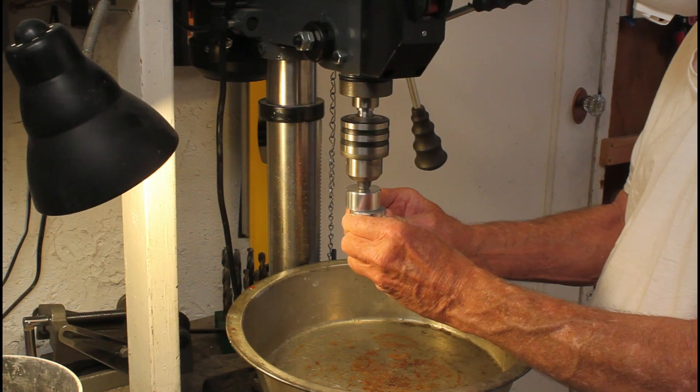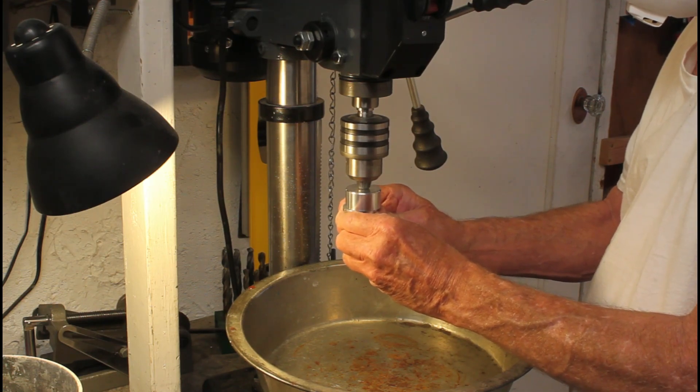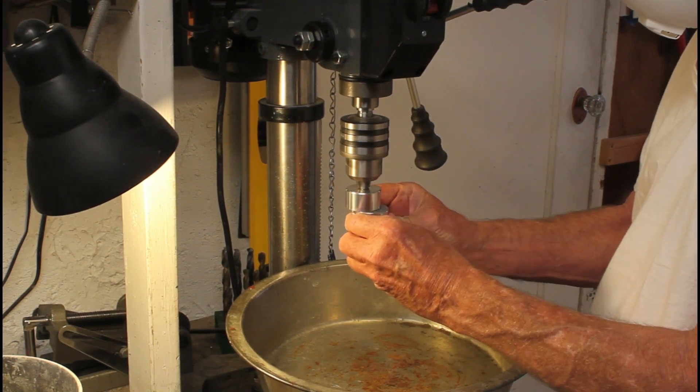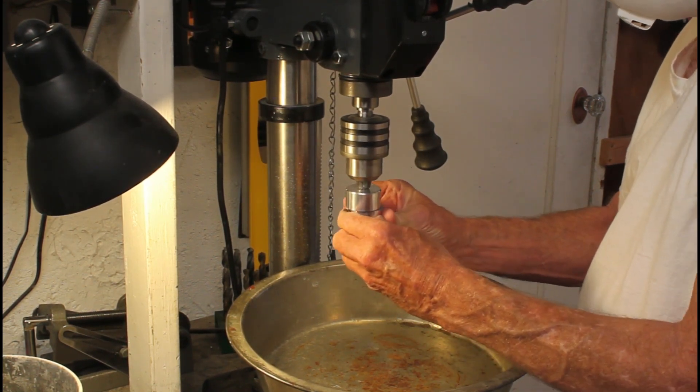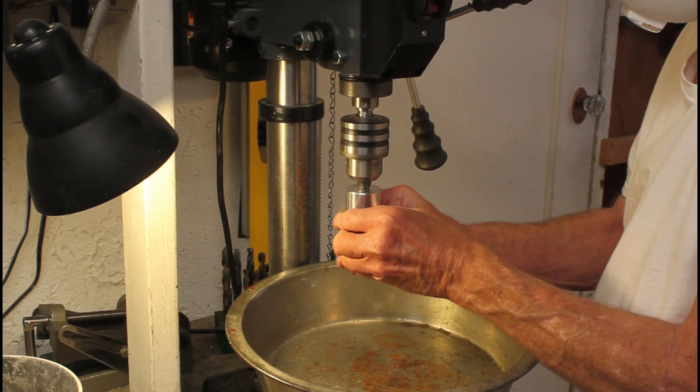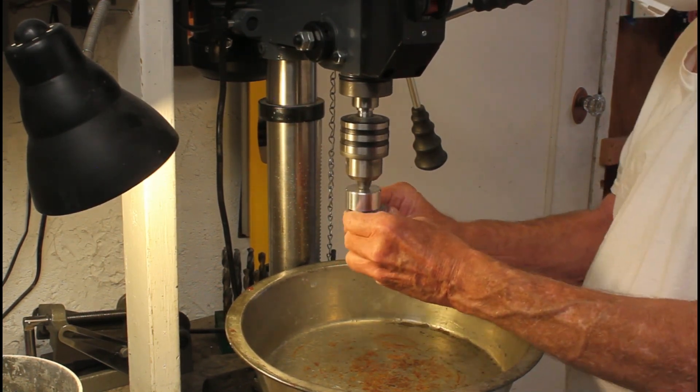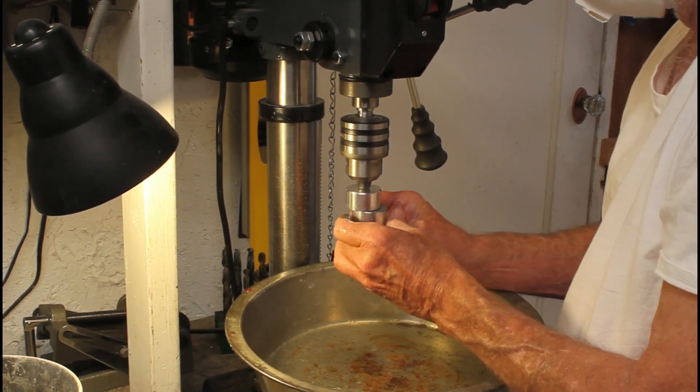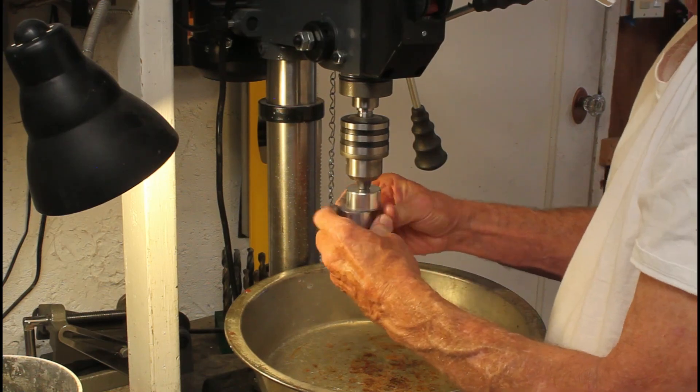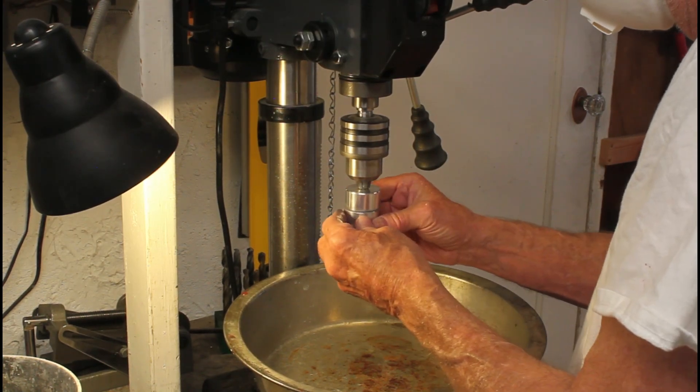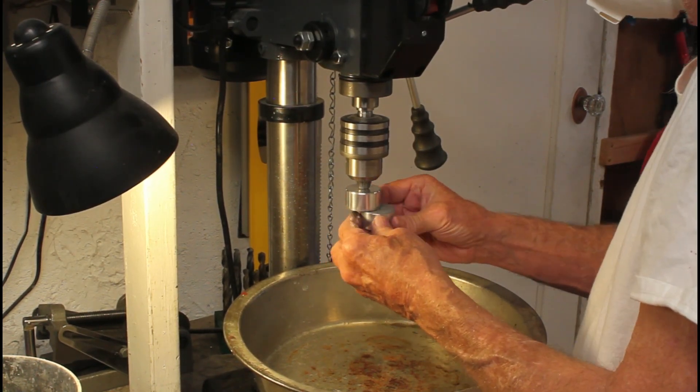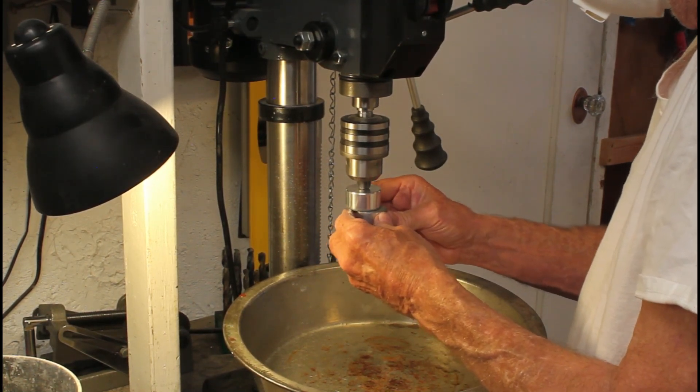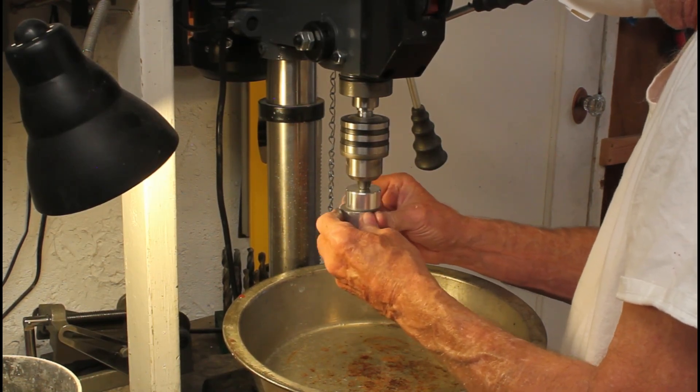So as the process happens here, and I'm going to speed this up here in a minute, but as the process goes on, the mirror and tool start to have better and better contact. This is highly abbreviated. And pretty soon they come to have almost the same shape, which is going to be spherical. And they're going to have the same radius, one convex and one concave.